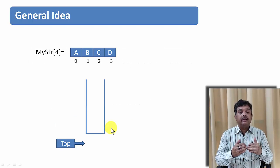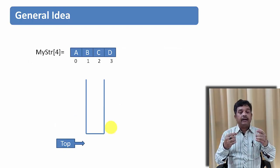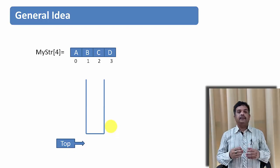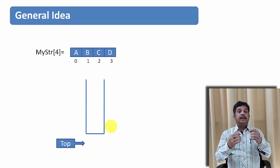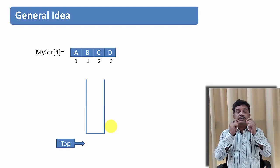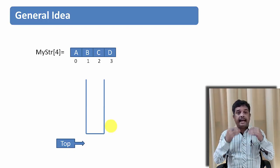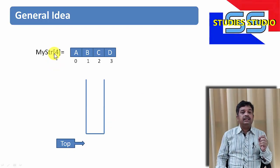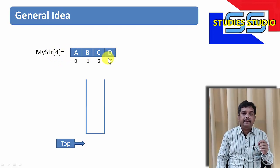Now for reversing a string, let us take an example, and after that we are going to understand this with the help of code. In order to reverse a string, let us take a general idea of the process we are going to adopt, and then we will take the algorithm. So basically, if my string contains four characters A, B, C and D,